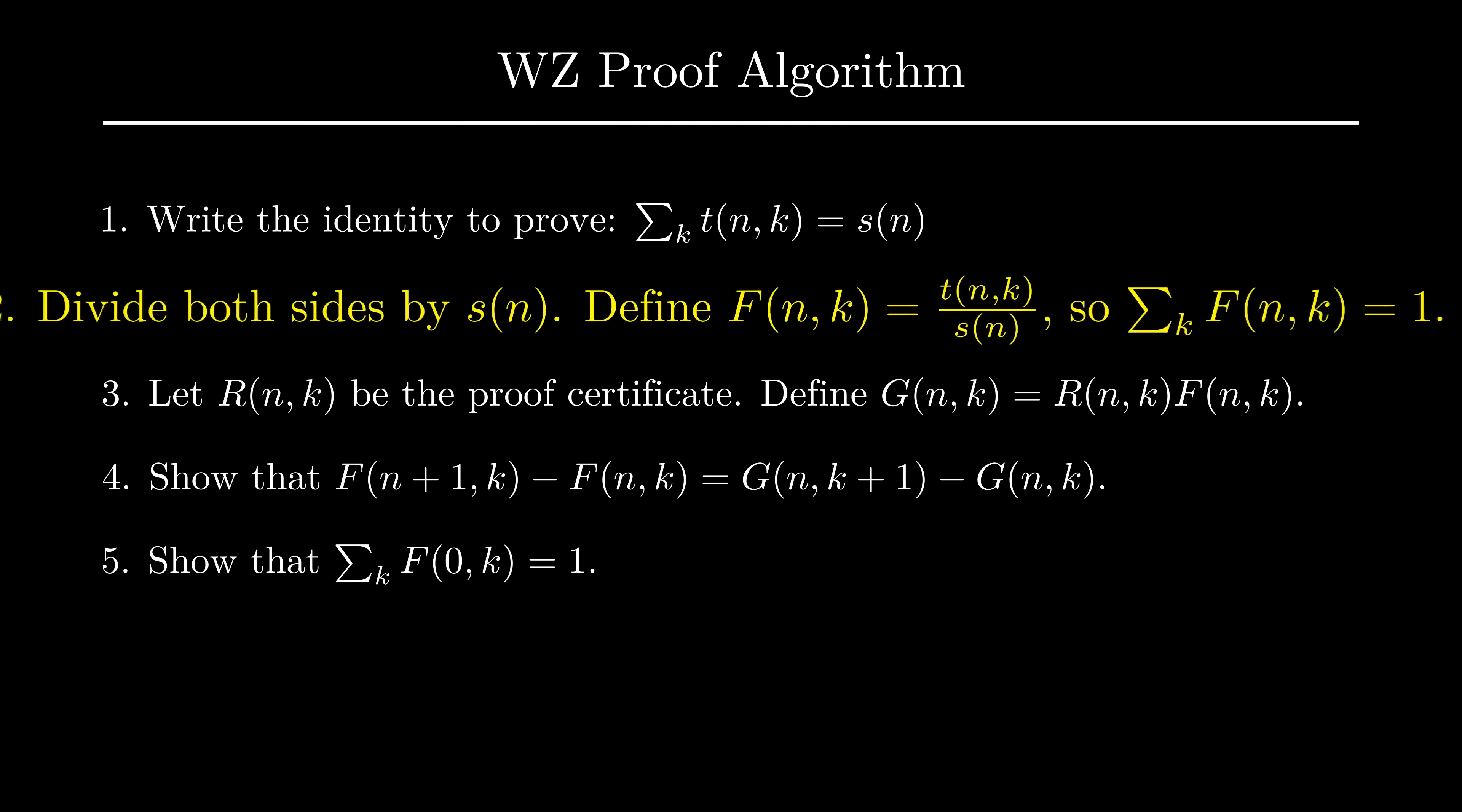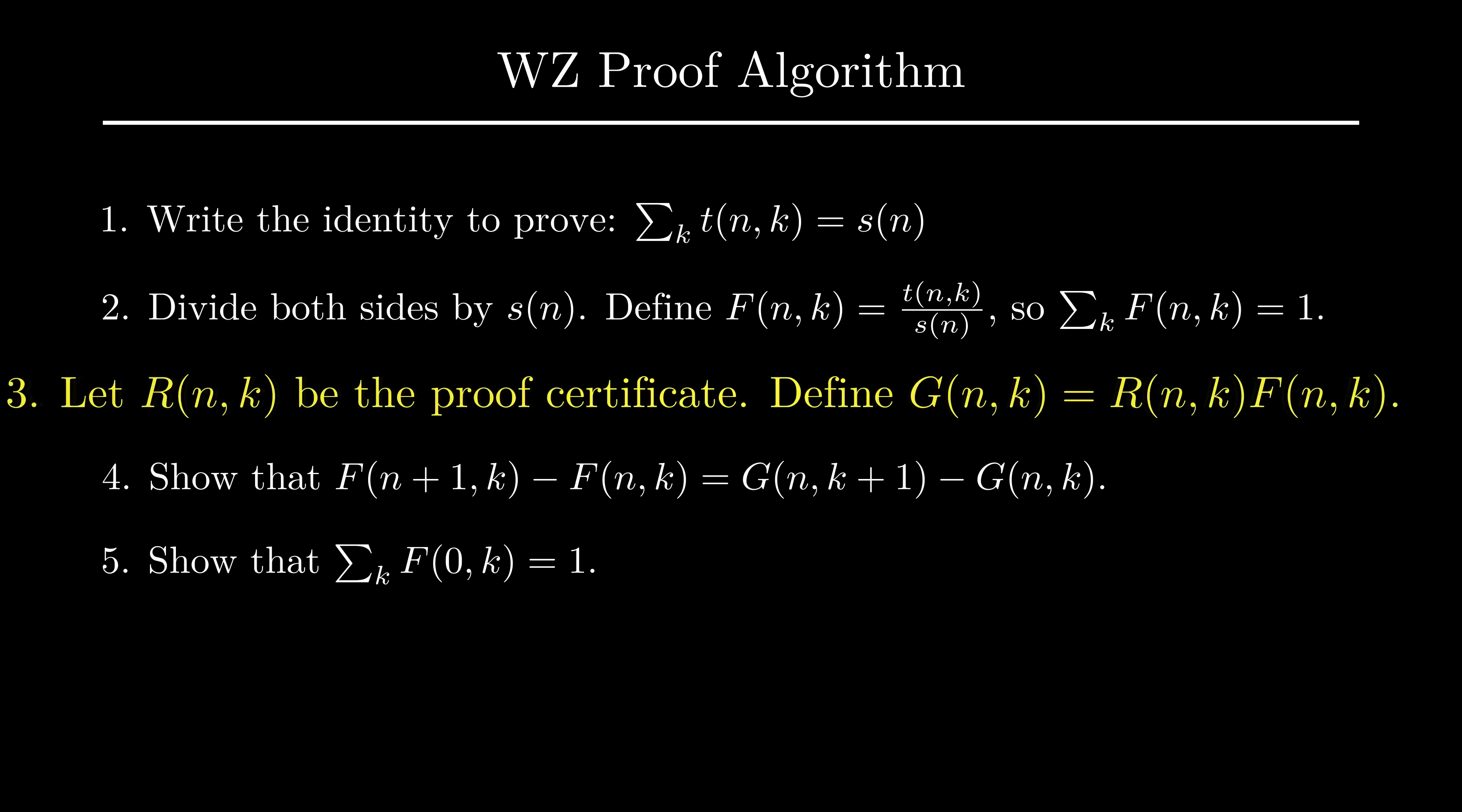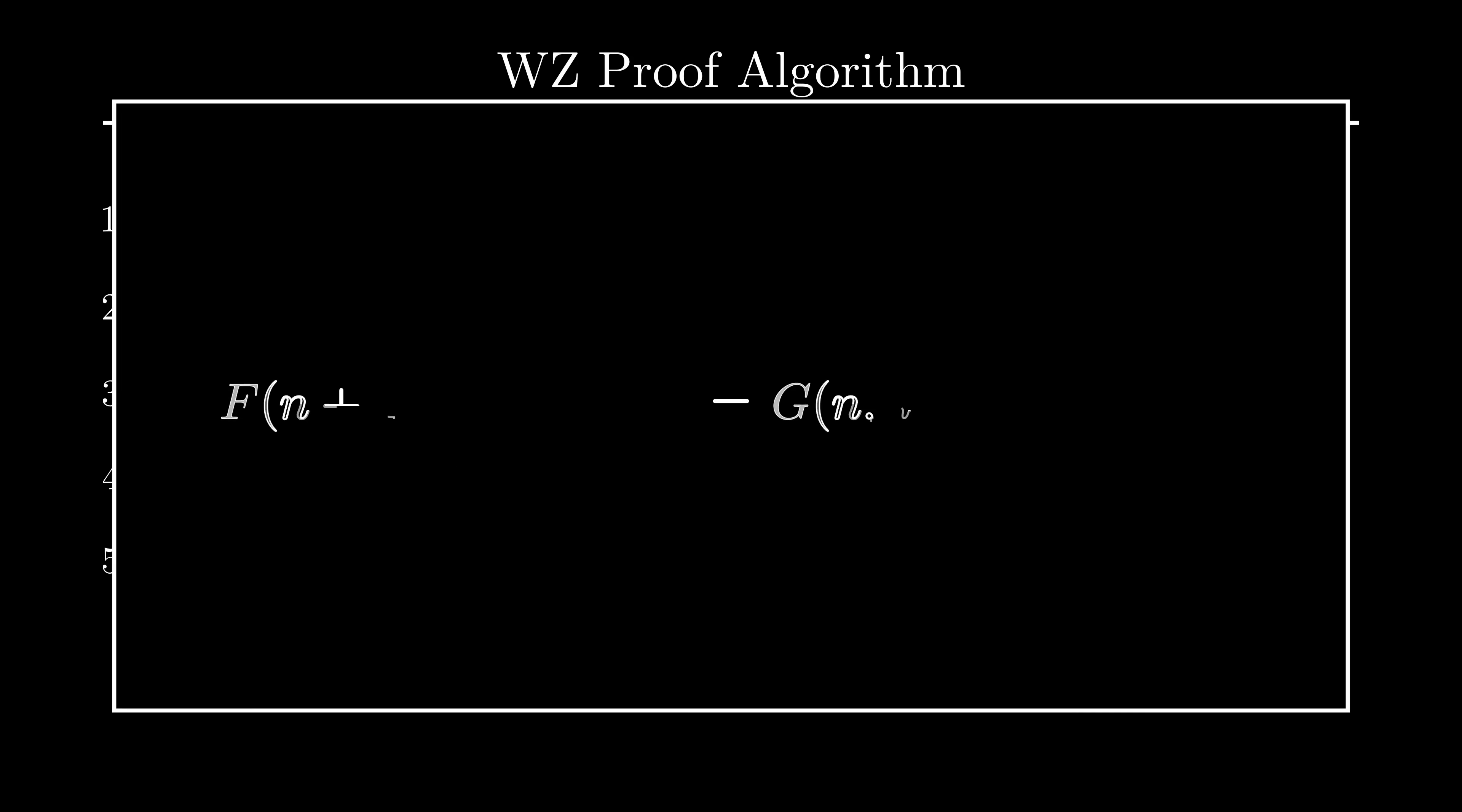The second step is pretty straightforward. Instead of proving our original identity, we can obtain an equivalent identity to prove by just dividing both sides by the closed form s. Our goal is now to prove that the sum of f over k is 1. The third step is where we plug in our proof certificate, the rational function r. Define g as the product of r and f. The fourth step is where the magic happens. If the proof certificate r is correct, we will be able to show that the following equation is true. If this equation turns out to be true, there is something really nice that happens.